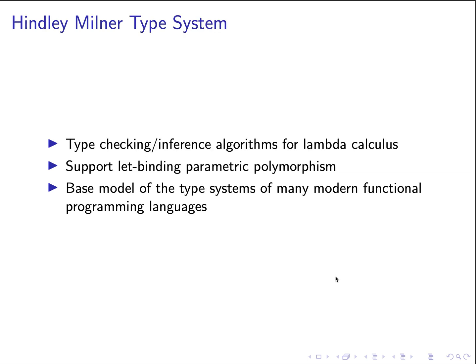The classic type system called the Hindley-Milner type system was concurrently developed by J. Roger Hindley and Robin Milner during the early 70s. It is a classic system that gives a full specification of what the type checking and inference algorithms do, specifically for lambda calculus. It supports let-polymorphism and is a base model used for many modern functional programming languages such as Haskell.